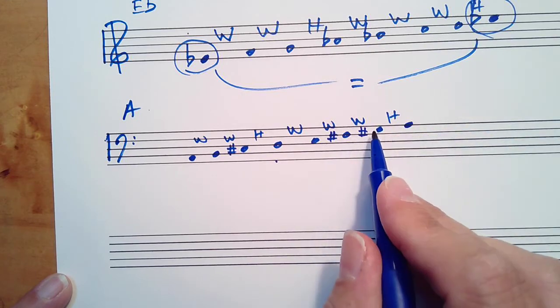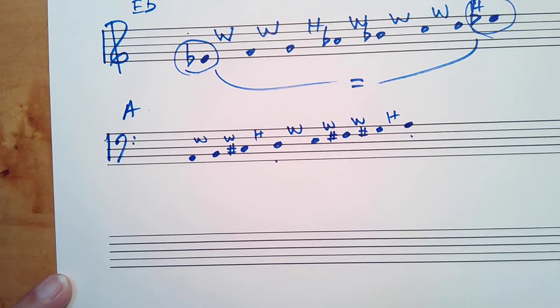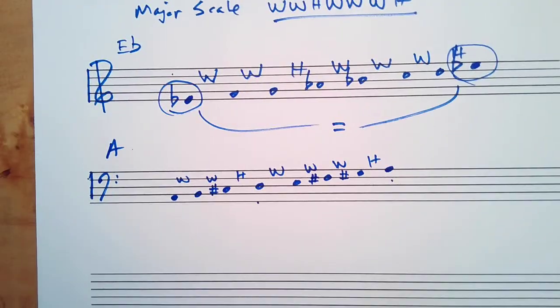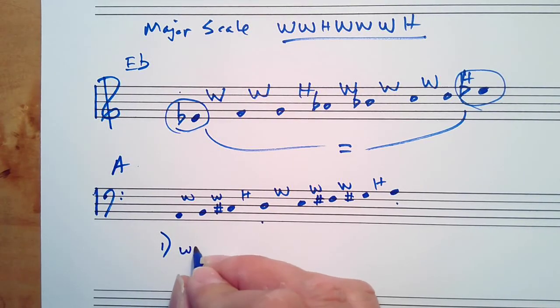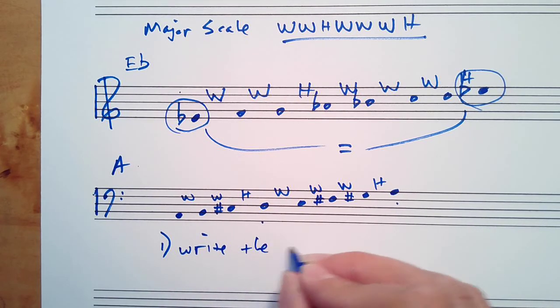And a half step up is A. That's the whole step half step method. So step one, write the note heads one octave.